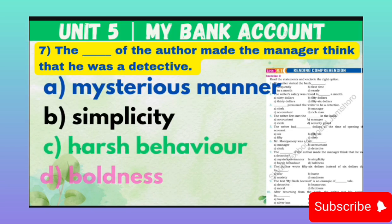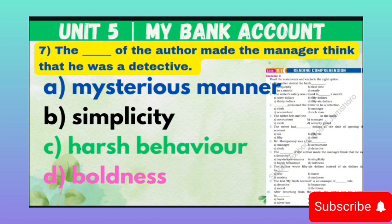MCQ number 7: The blank of the author made the manager think that he was a detective. It means musannif ke kis andaaz ne manager ko yeh sochne par majboor kiya ke woh jasoos hai. Option A: Mysterious manner. Option B: Simplicity. Option C: Harsh behavior. Option D: Boldness. Correct option is A — Mysterious manner.